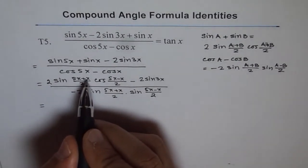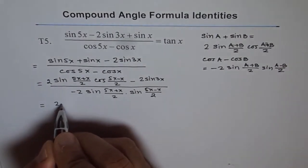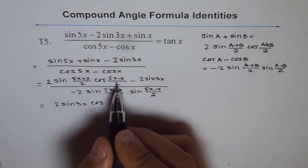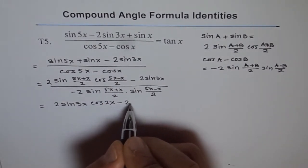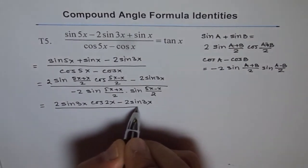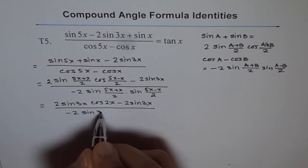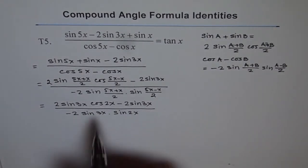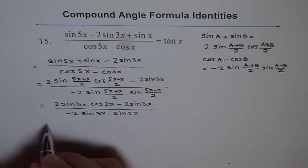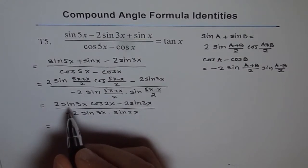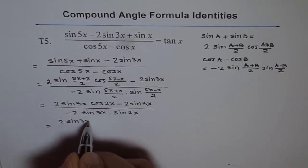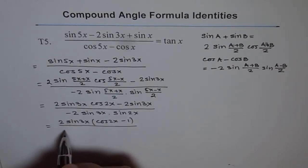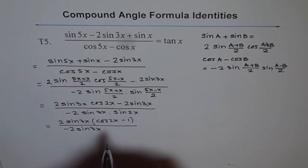Now simplifying: 5x plus x is 6x, and 6x divided by 2 is 3x, so we get 2 sin 3x. For cosine, 5x minus x is 4x, and 4x divided by 2 is 2x, giving cos 2x. So the numerator becomes 2 sin 3x cos 2x minus 2 sin 3x, divided by minus 2 sin 3x times sin 2x. We can now take 2 sin 3x as a common factor.